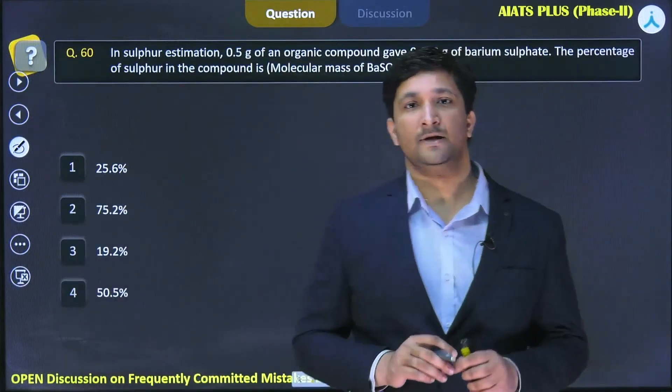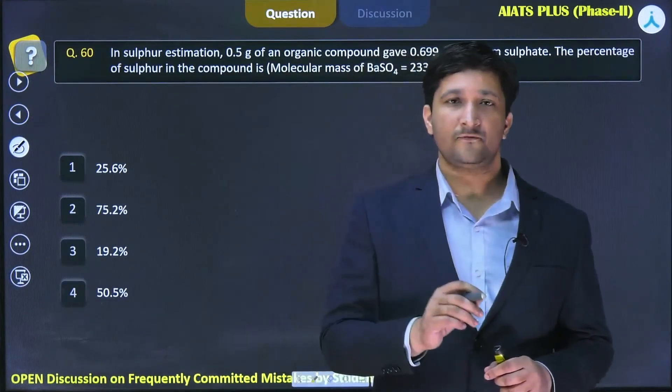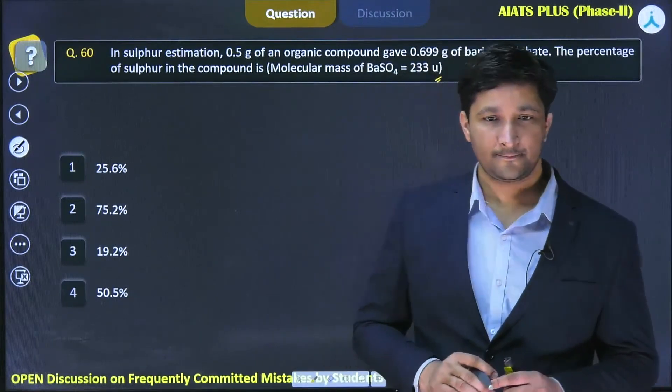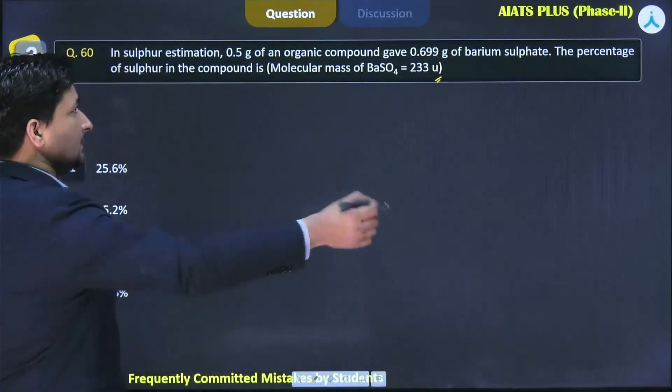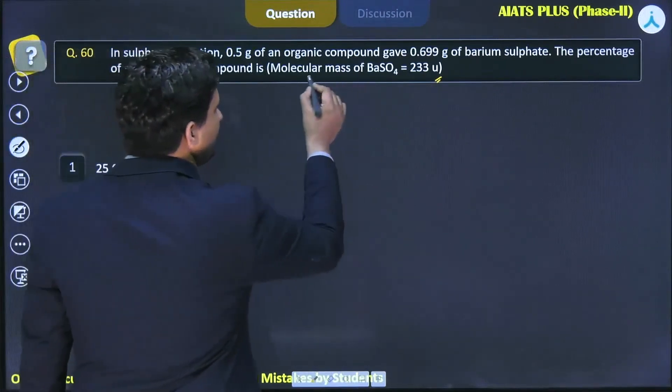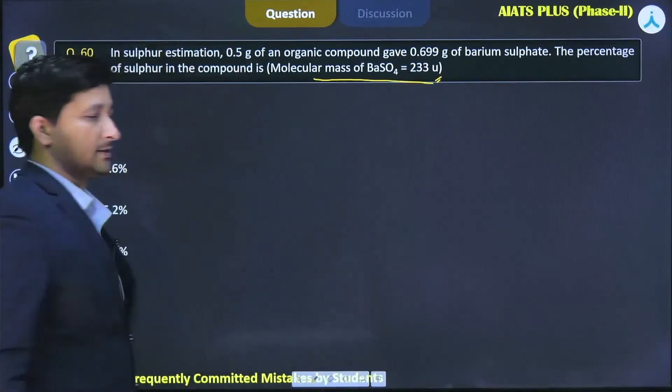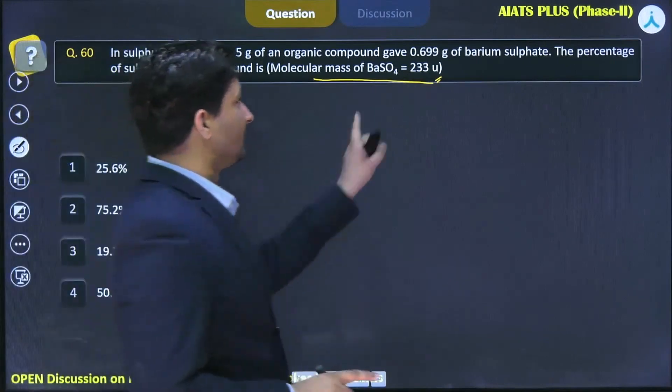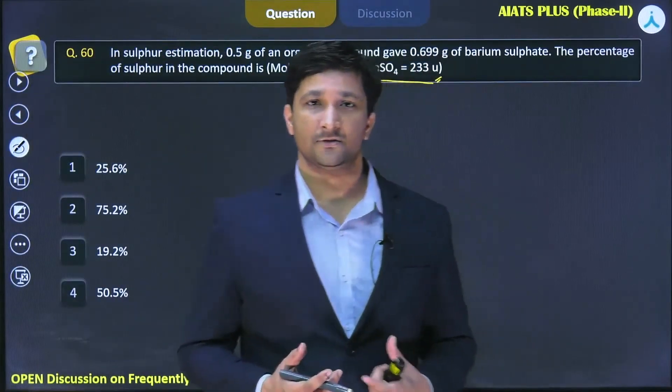Now how are we going to solve this? You can see that the molecular mass of barium sulfate is 233. In this barium sulfate, there is one sulfur and its mass is obviously 32.